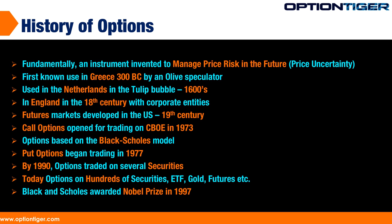Fundamentally, an option is an instrument that was invented to manage price risk at some point in the future. There has to be some kind of price uncertainty in the future, and then you can create an instrument like an option around it. There is also known usage of options in the Netherlands in the 1600s — if you've heard of the tulip bubble, options were used then. Options were also used in England in the 18th century. Then in the 19th century, futures markets started developing in the U.S. Finally, options as an instrument started trading on the CBOE — the Chicago Board of Options Exchange — in 1973.